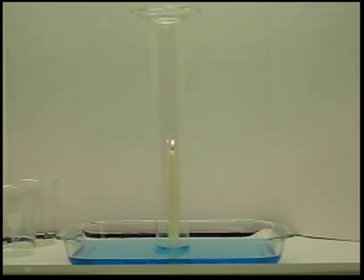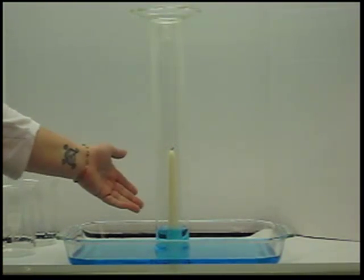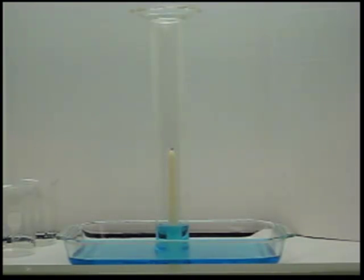And eventually, as the candle uses up all the oxygen that's in the column of air, as you can see, the water is going to come up because the pressure in the column is actually lower than the pressure in the atmosphere. So it's displacing the water until it hits equilibrium.